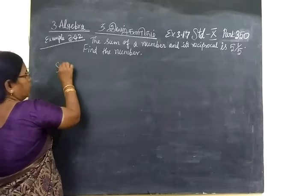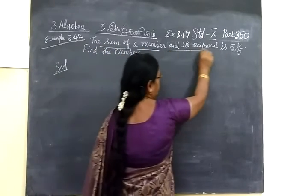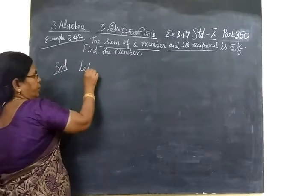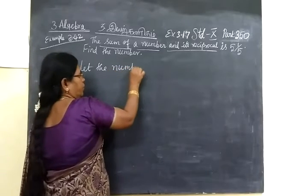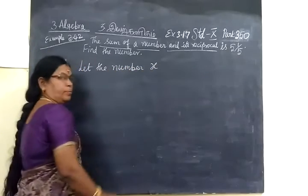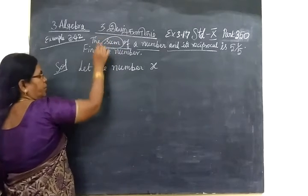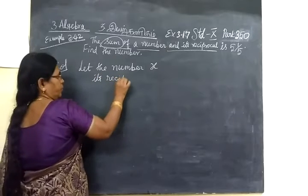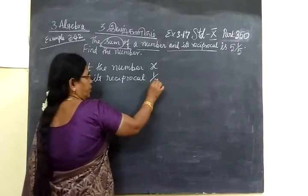We are given the sum of a number and its reciprocal. So let the number be x. We take the number be x. The sum of a number and its reciprocal - so its reciprocal means 1 by x.